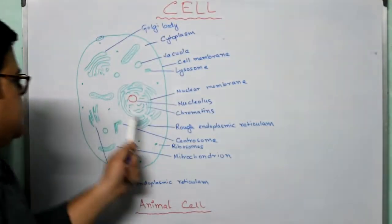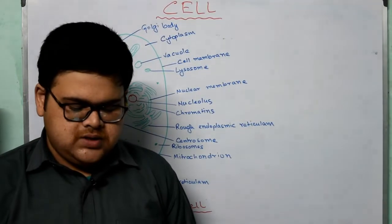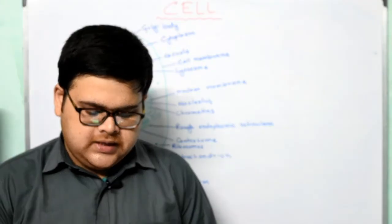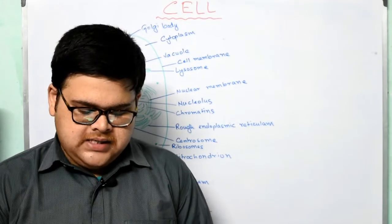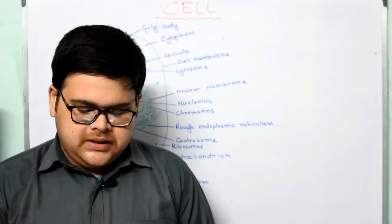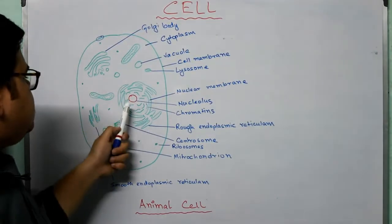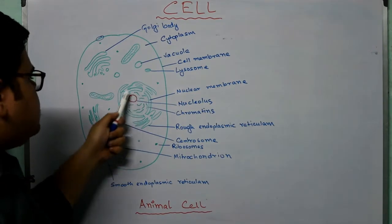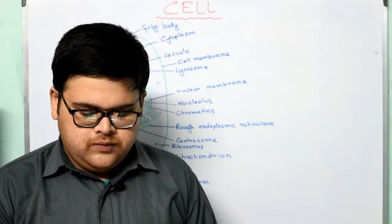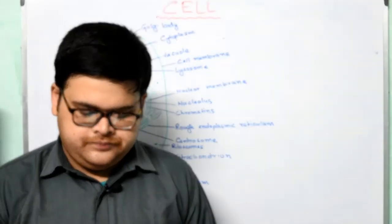The first organelle is the nucleus. You can see the red one in the diagram — that is the nucleus. The nucleus is usually spherical in shape. It controls all the activity of the cell and hence it is called the brain of the cell. It is surrounded by a double-layered membrane called the nuclear membrane. This membrane contains many pores called nuclear pores. The nuclear membrane surrounds a jelly-like fluid called the nucleoplasm. For reference, go to figure number 2.4 of page number 42 of Oxford Biology — it is more accurately shown there.